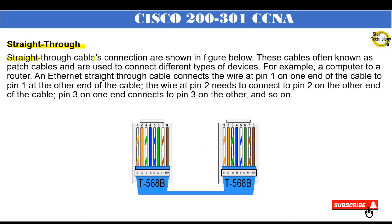Straight-through cables: these cables, often known as patch cables, are used to connect different types of devices, for example a computer to a router. An ethernet straight-through cable connects the wire at pin 1 on one end to pin 1 at the other end, pin 2 to pin 2, pin 3 to pin 3, and so on. In a straight-through cable, both sides of the connectors have the same arrangement of wires — the first pin is white-orange and the second pin is orange, and the other side has the same connection.